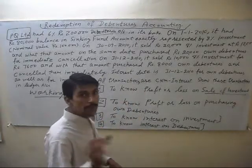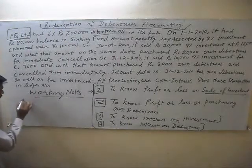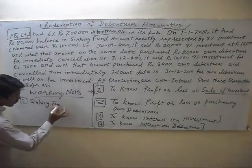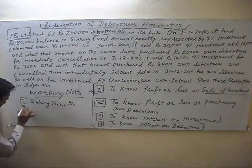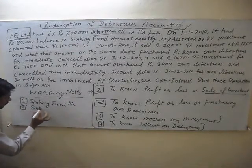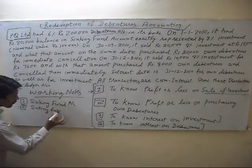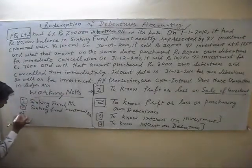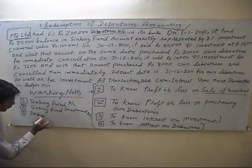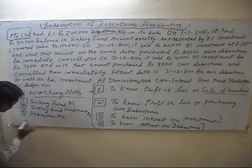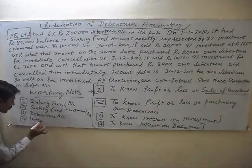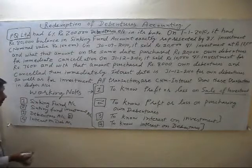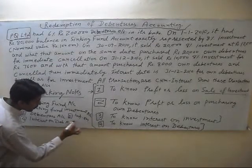After this, we will make five accounts. First, sinking fund account. Second, sinking fund investment account. Third, debenture account. Fourth, interest on debenture account. And fifth, we will make interest on investment account.